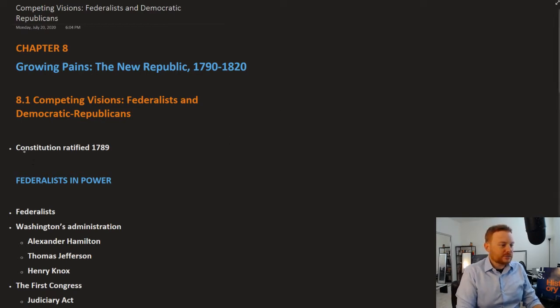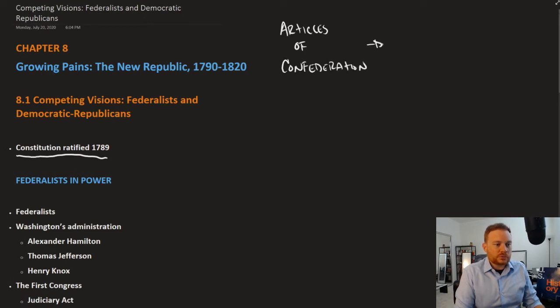Where we last left off was with the ratification of the Constitution. Recall that the first national government of the United States was the Articles of Confederation.